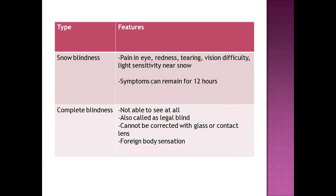In snow blindness, when the person is exposed to snow there is sudden pain, redness, and vision difficulty in the eye because light reflecting back from snow creates an irritating effect, especially ultraviolet radiation. Symptoms can remain for 12 hours. In complete blindness, the person is not able to see at all; it is also called legal blindness. It cannot be corrected with glasses or contact lenses, and there is always a foreign body sensation in the eye despite no visual perception.